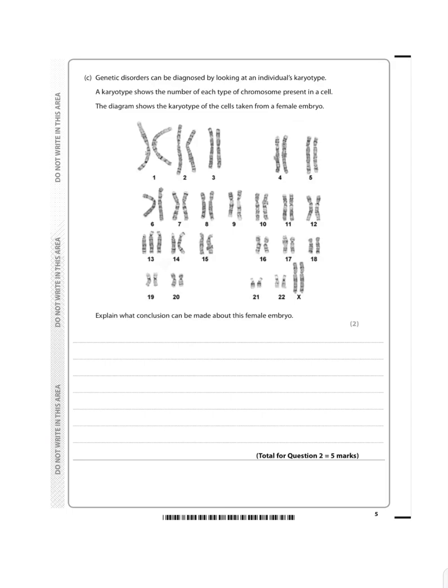Well, we can see that all these chromosomes come in pairs, and that's what we'd expect. However, chromosome 13 shows that there are three chromosomes, when normally there's supposed to be two. So what conclusion can be made here is polysemy.